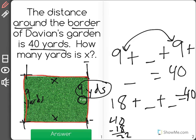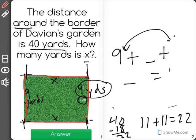22 yards are left and I know they have to be the same amount. So 11 plus 11 equals 22. This tells me that the length of the missing side is equal to 11.